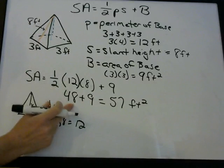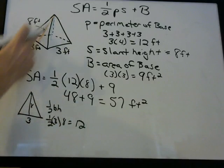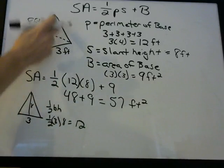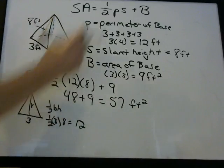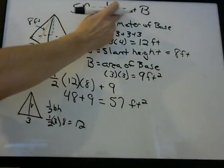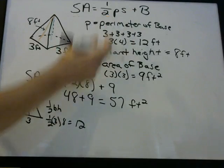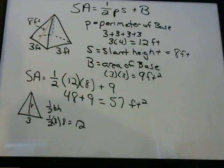There are four triangles, so that's 48. That's really where this number comes from — all you're doing is calculating the area of each triangle and adding them together. But there's a quicker way to do it using perimeter and slant height.